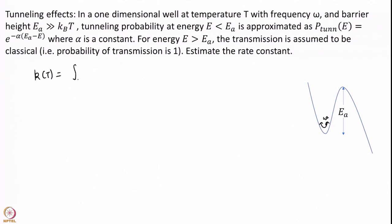How do we solve this problem? The idea is: let us set some energy E. At that energy E, what is the rate constant, and what is the probability of being at that energy E? If I integrate these together, I will get the total rate. Energy cannot be negative because I cannot be lower than the minima. So this is what I have to calculate.